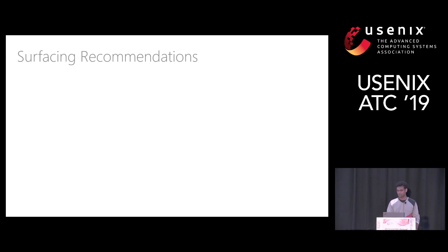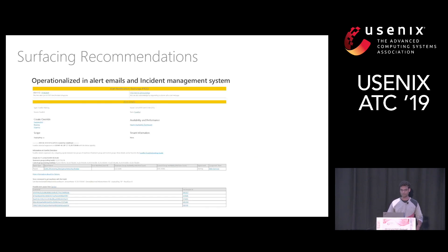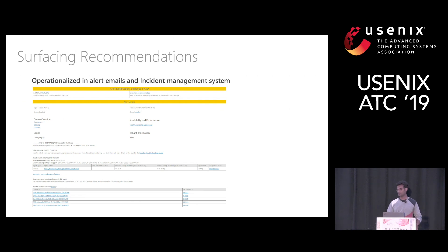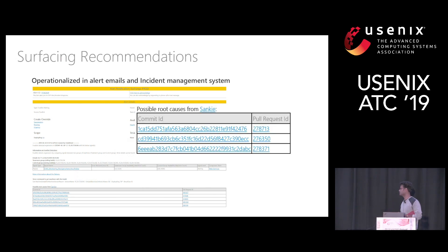Finally comes the recommendation component. This is a sample incident management system used across Microsoft. Whenever an issue happens in a service like Exchange, an incident is raised. Before Orca, the incident would just say something like 'this is broken in this build at this timestamp, go fix it.' After integrating Orca into the incident management system, at the bottom of the incident you see Orca results — it says 'potentially these are the root cause commits and pull requests which you should first look at.'